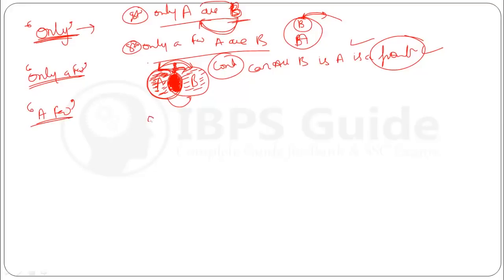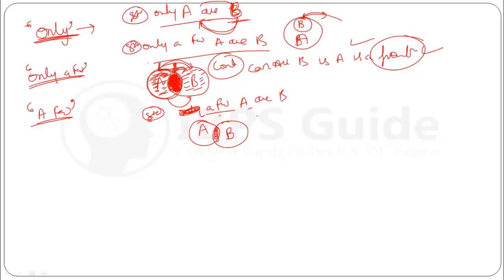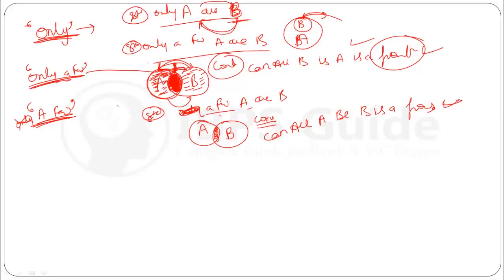Now what is 'a few'? If the statement says 'a few A are B', the Venn diagram will be similar. But if a conclusion asks whether 'all A being B' is a possibility, it will be true. Because in this case, 'only' has not been included — it only contains 'a few'. That means in 'only a few' there is a restriction, but in the case of 'a few' there is no restriction. A's remaining part can also go with B, and B is free to go with A. You will understand these concepts better by solving the questions.